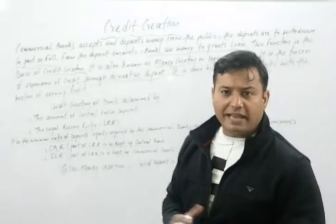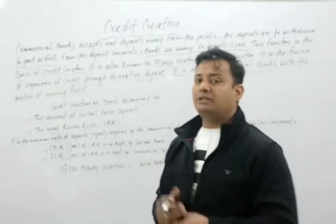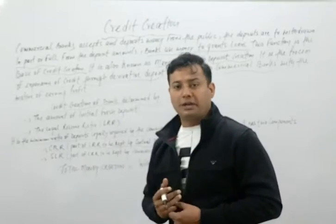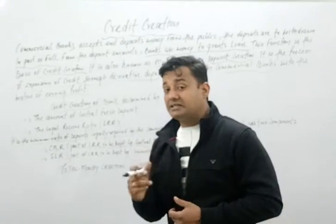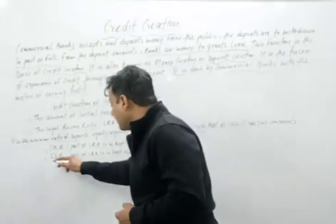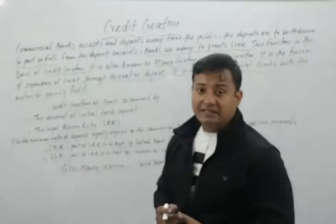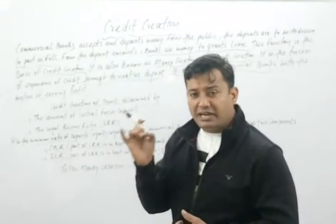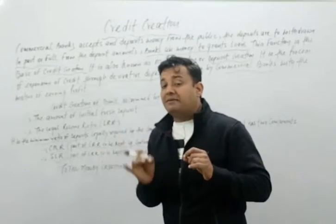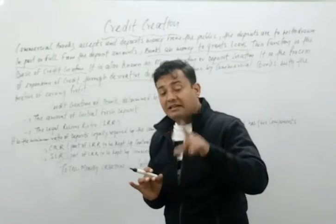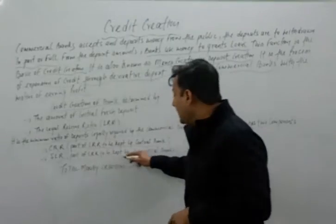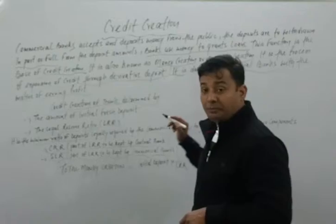CRR, Cash Reserve Ratio, is a part of the LRR to be kept with the central bank — for example, 20 percent of LRR. The second component is SLR — Statutory Liquidity Ratio. SLR is the part of the LRR to be kept by commercial banks themselves.